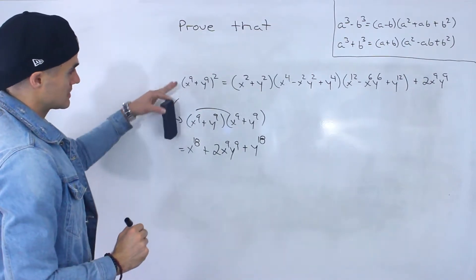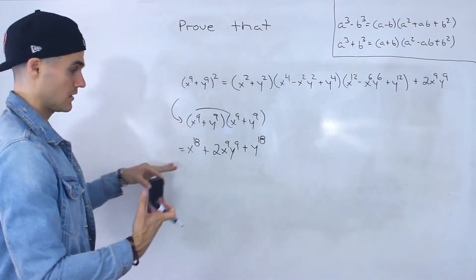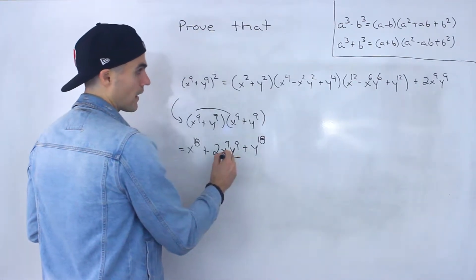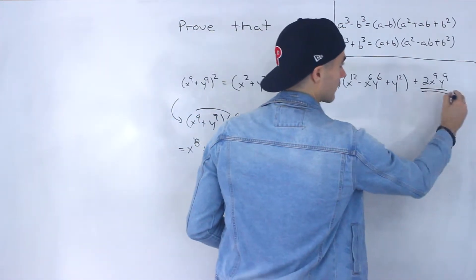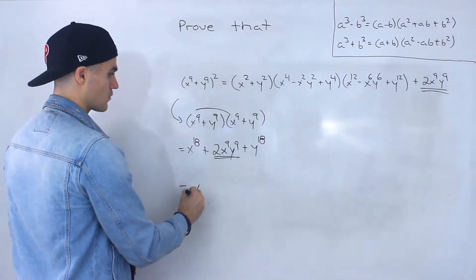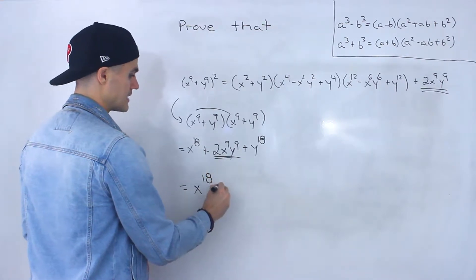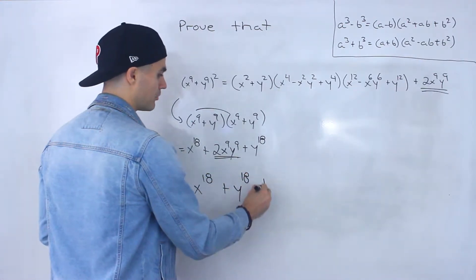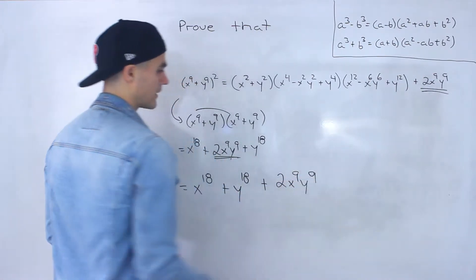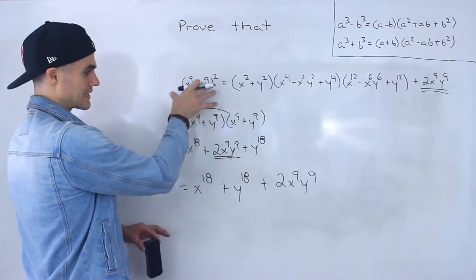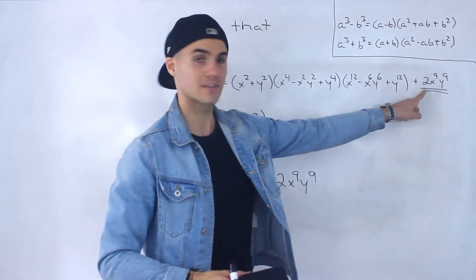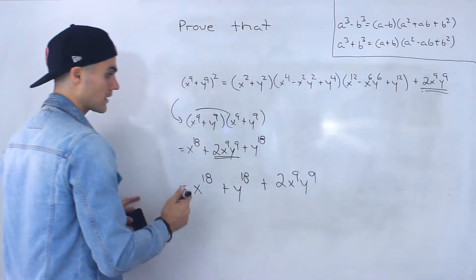So notice that we took this and expanded it, and wrote it as this. Now notice that we got this 2x⁹y⁹ and we have that over here on the right side as well. So what we can do is rewrite this as x to the 18 plus y to the 18 plus 2x to the 9 y to the 9. Notice on this left side we have this expression at the end, and we got that same expression on the end here on the right side.